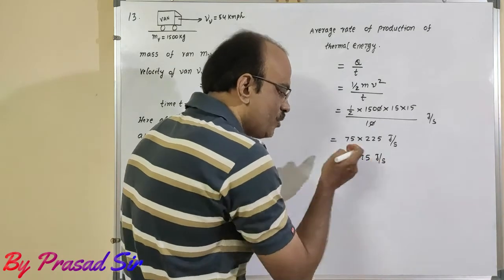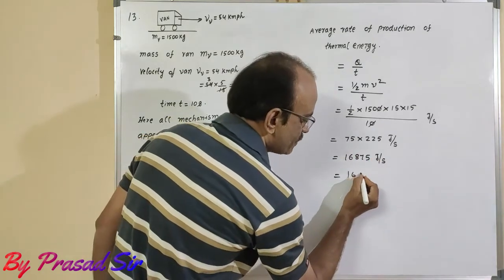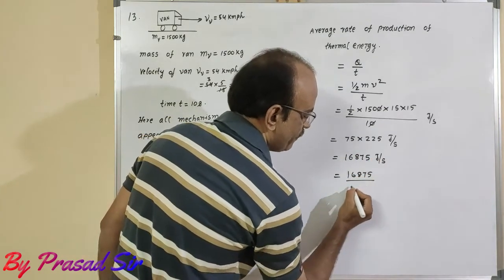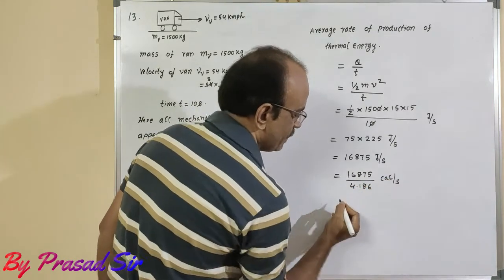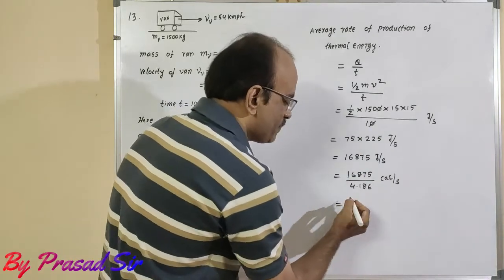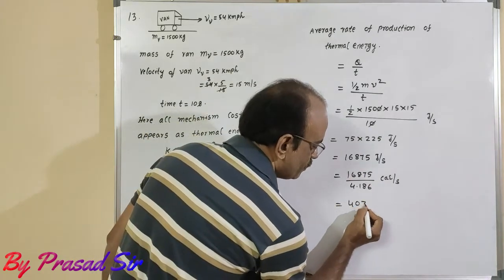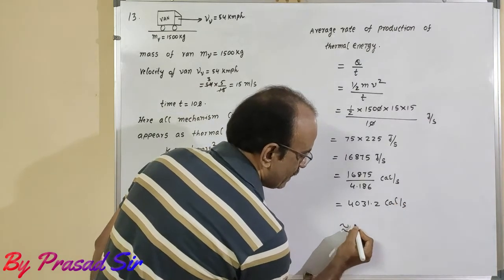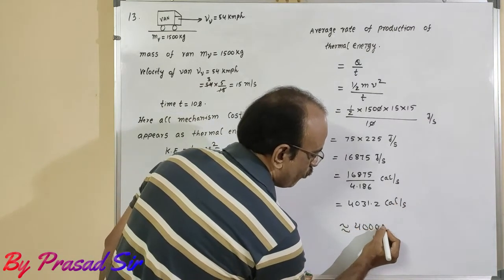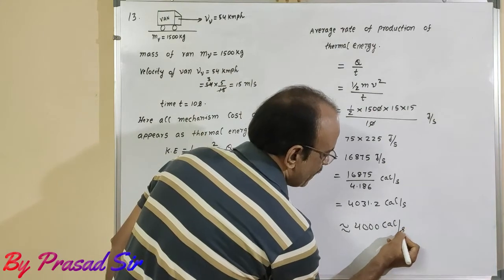But I want to convert joule into calories: 16875 divided by 4.186 calories per second. So, on division, 4031.2 calories per second, or approximately 4000 calories per second.